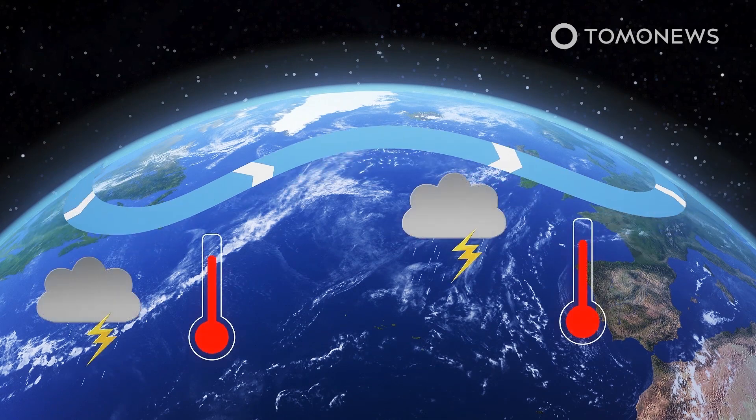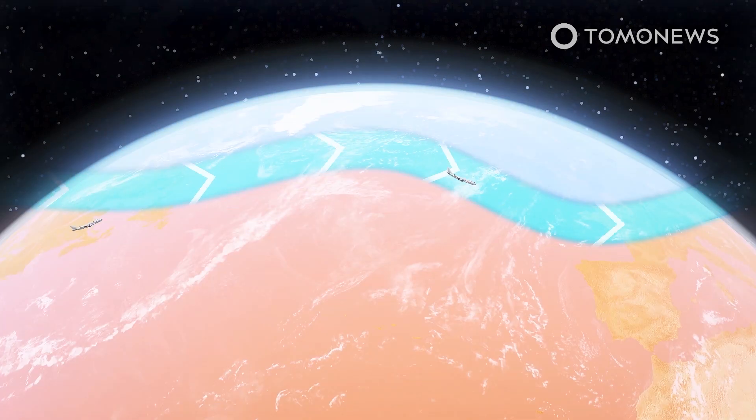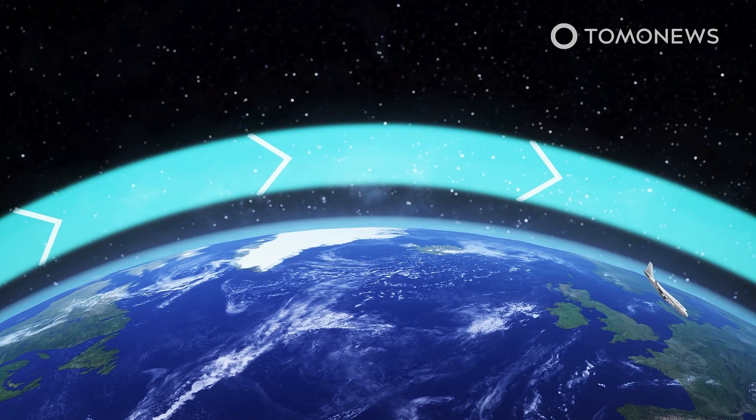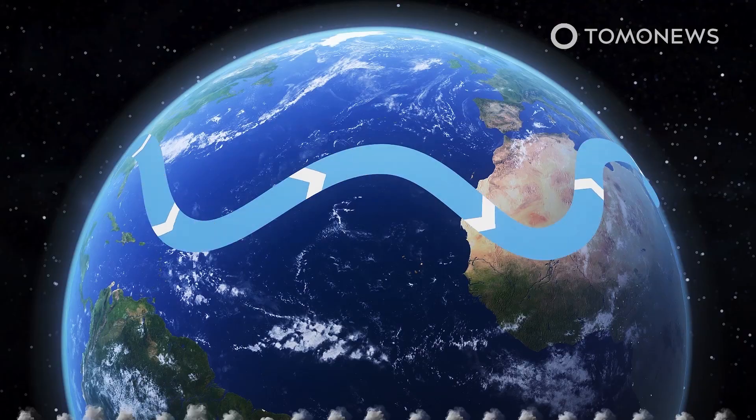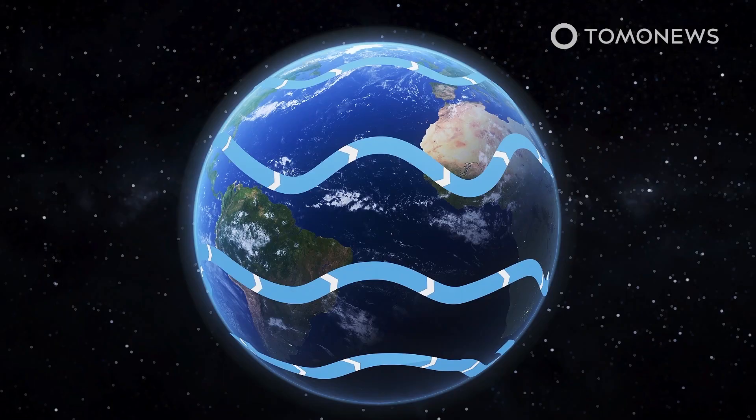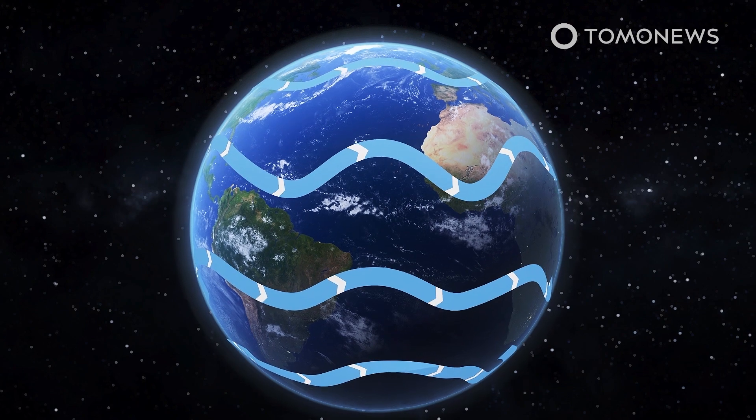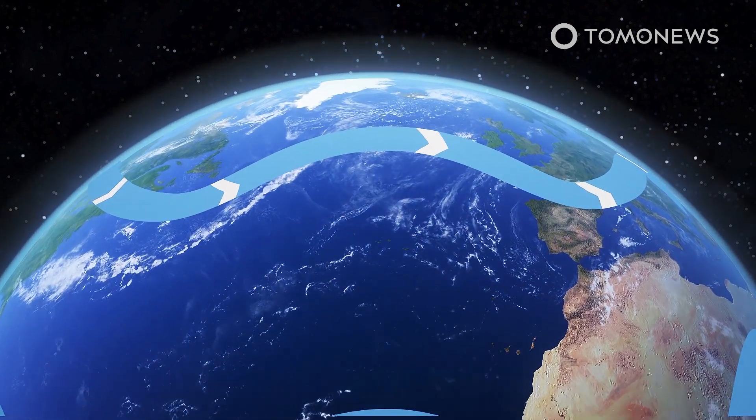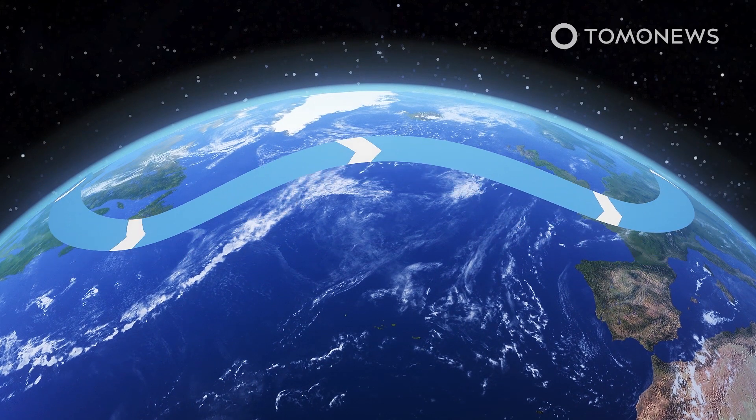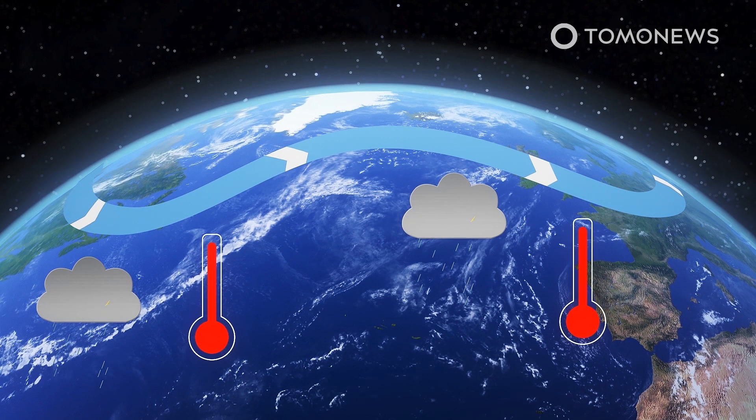Such significant impacts on weather patterns means that the jet stream is an area of significant focus for climate scientists trying to predict what it will do next. And in September, a study published in the Proceedings of the National Academy of Sciences warned the planet's northernmost wind tunnel, called the North Atlantic Jet Stream, will start migrating northward if the Earth keeps warming up.